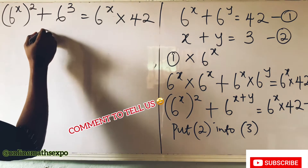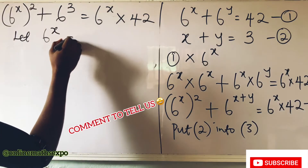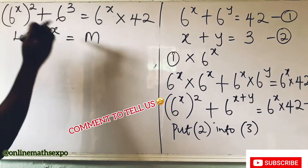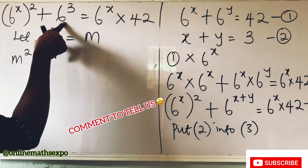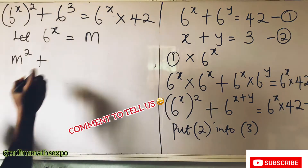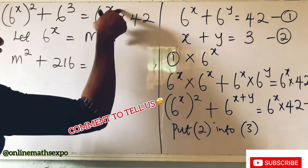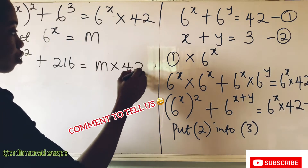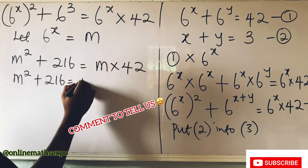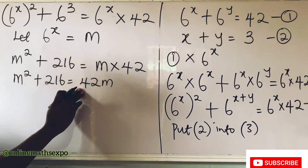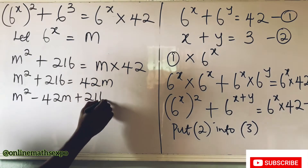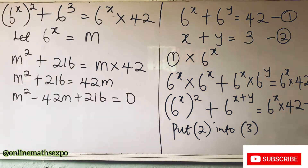You'll notice something common: 6 to the power of x appears repeatedly. Let's let 6 to the power of x equal m. Replacing it, we have m squared plus 216 equals m times 42. Rearranging, we get m squared minus 42m plus 216 equals zero. We now have a quadratic equation.